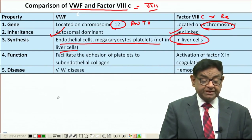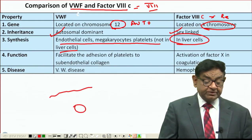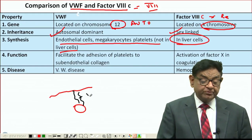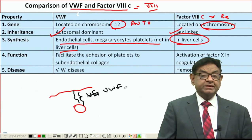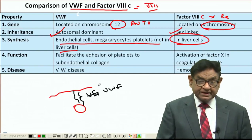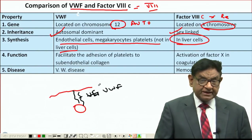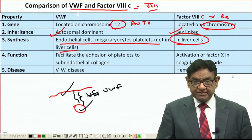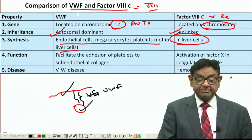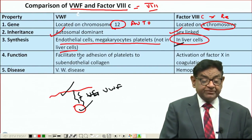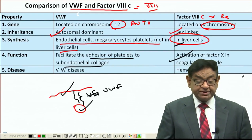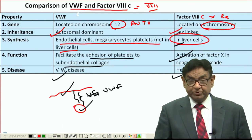To make it simple: the platelet attaches to the injured endothelium via von Willebrand factor, so it is easy to remember that von Willebrand factor is released from both platelets and endothelium. Factor 8C, on the other hand, is synthesised in the liver. Von Willebrand factor facilitates adhesion of platelets to subendothelial collagen and is important for clotting — deficiency leads to von Willebrand disease, while deficiency of Factor 8C leads to Haemophilia A.